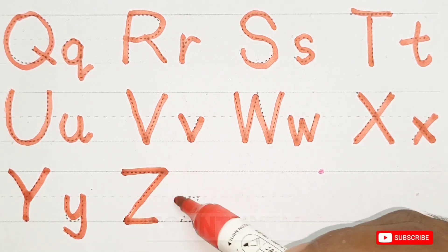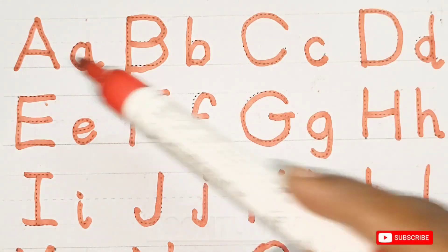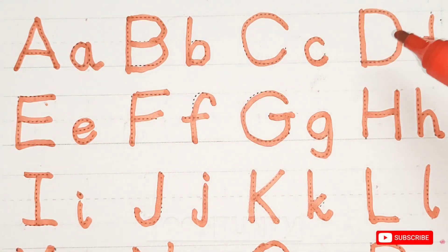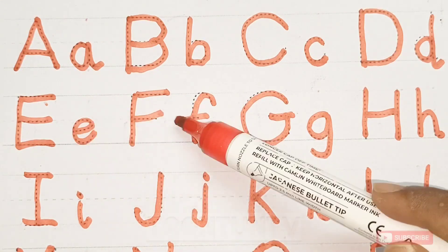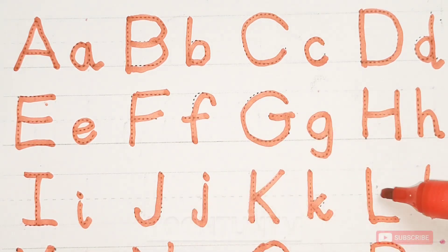Z for zebra. A, B, C, D, E, F, G, H, I, J, K, L.